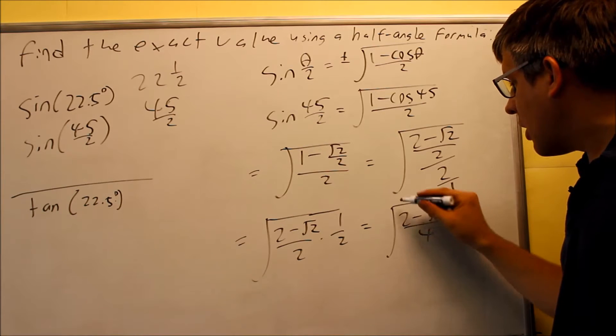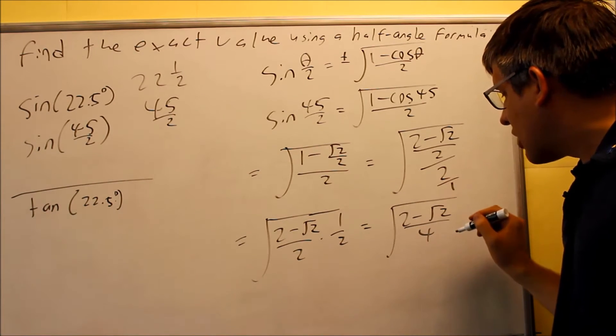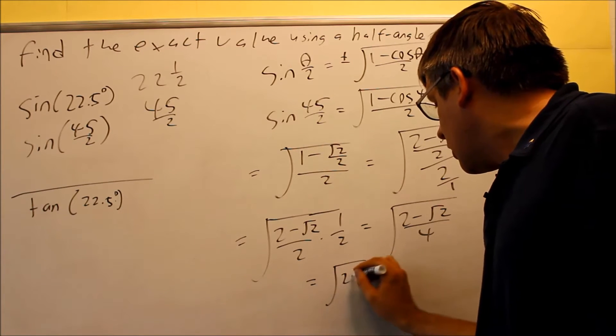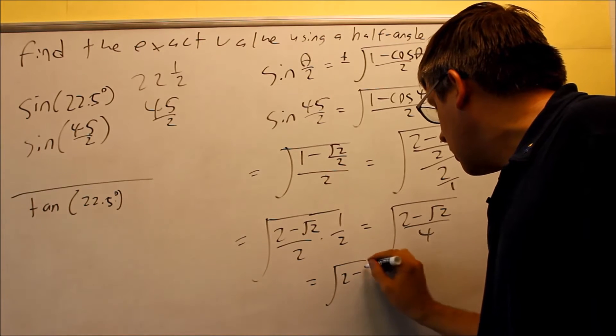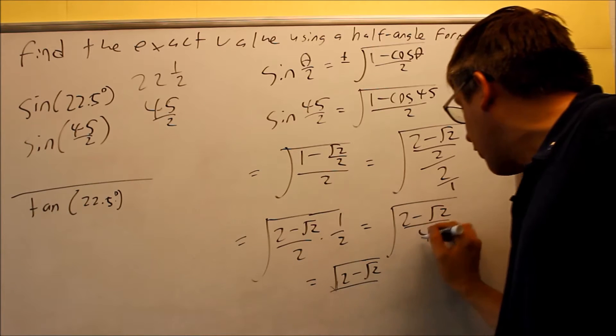But I can apply the square root in the top and the square root in the bottom separately. So if I apply that separately, then we'll get the final answer, which is going to be 2 minus radical 2 on top.